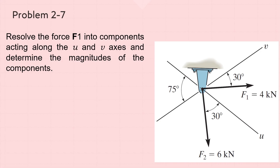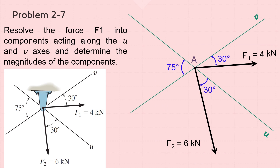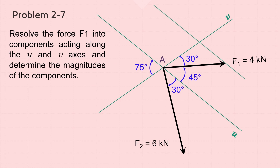The next problem is 2-7. Resolve the force F1 into components acting along the U and V axes and determine the magnitudes of the components. Draw the free-body diagram as before. Since the angle between the U-axis and the V-axis is 75 degrees and the angle between F1 and the V-axis is 30 degrees, then the angle between F1 and the U-axis is 45 degrees. To resolve F1 into components along the U and V axes, draw a parallelogram in which F1 is one of its diagonals and two of its sides lie on the U and V axes. From the head of F1, draw a line parallel to the U-axis intersecting the V-axis at point B, then draw another line parallel to the V-axis intersecting the U-axis at point D. The AD arrow represents the F1 component along the U-axis, while the AB arrow represents the F1 component along the V-axis.